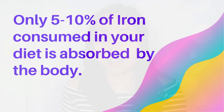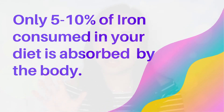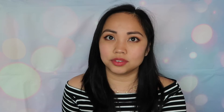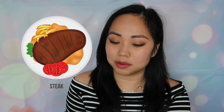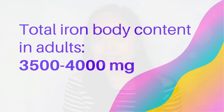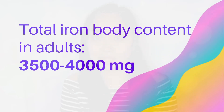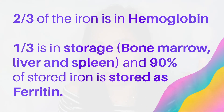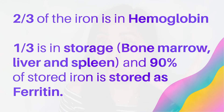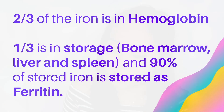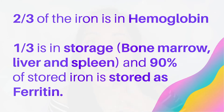Some trivia about iron: out of the iron you consume in your diet, only 5 to 10% is absorbed by the body. For adults, total iron body content is between 3,500 to 4,000 milligrams. Two-thirds of that iron is found in hemoglobin, and one-third is stored in the bone marrow, liver, and spleen — with 90% of that stored form being ferritin.